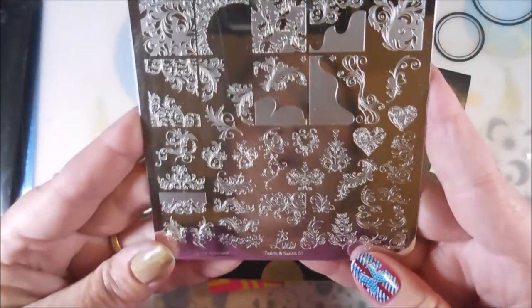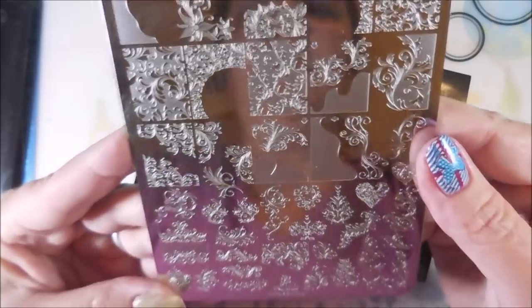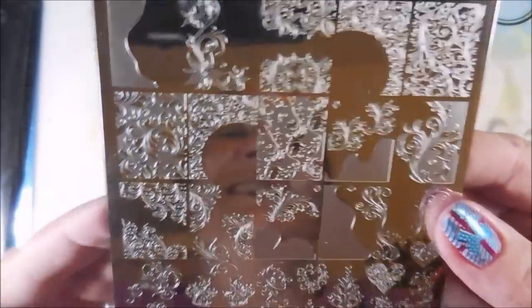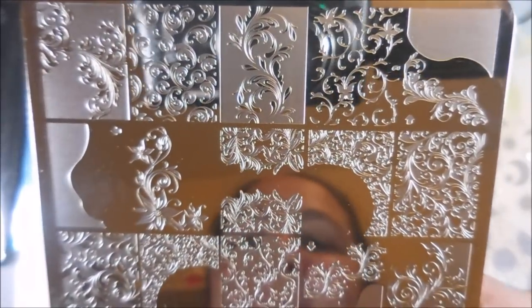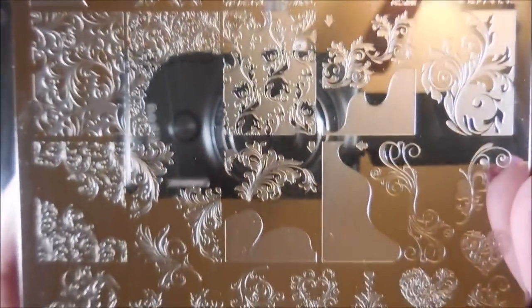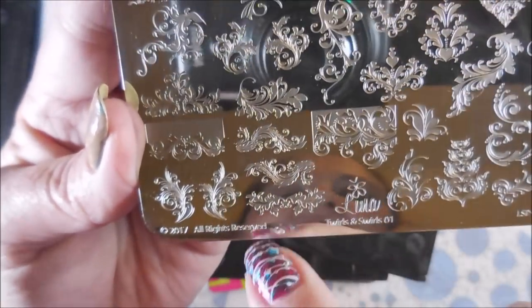Another one. This plate might as well be named moon baby nails plate because this is Lena twirls and swirls. I'm going to love every single image on this plate. Look at all that crazy prettiness. And it's got mirrored images of each other. That is the coolest thing ever.